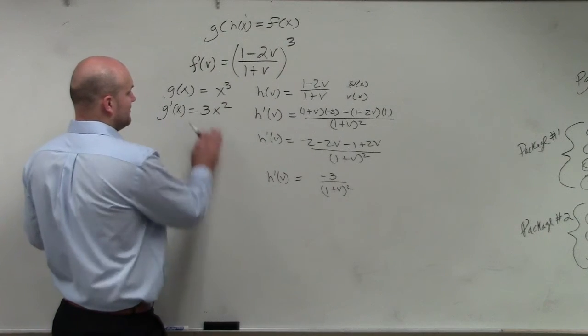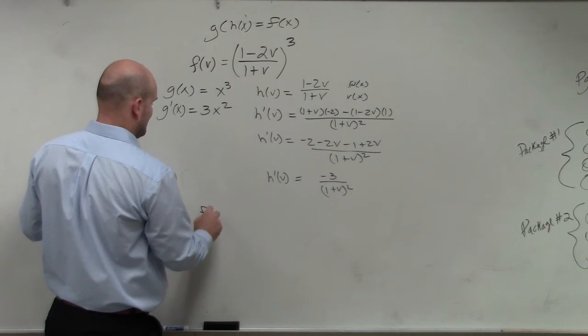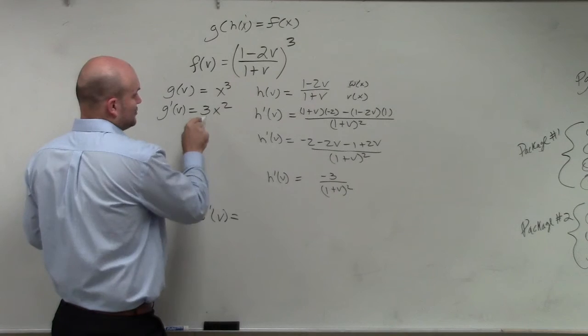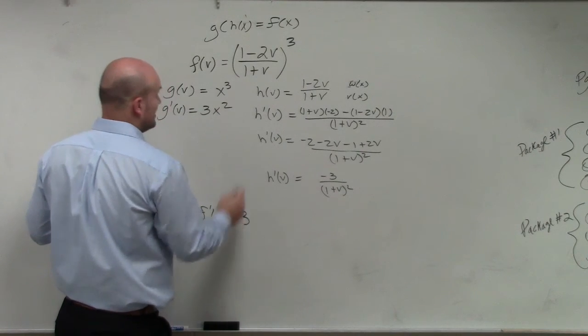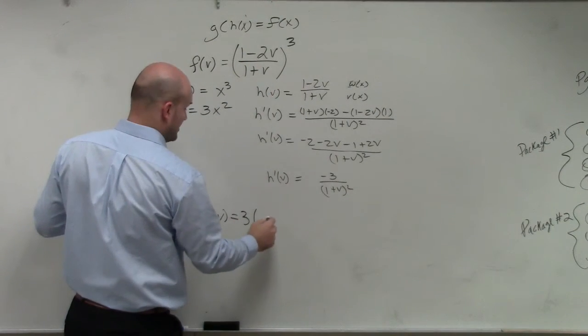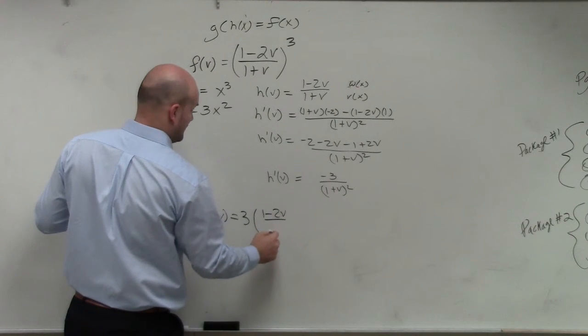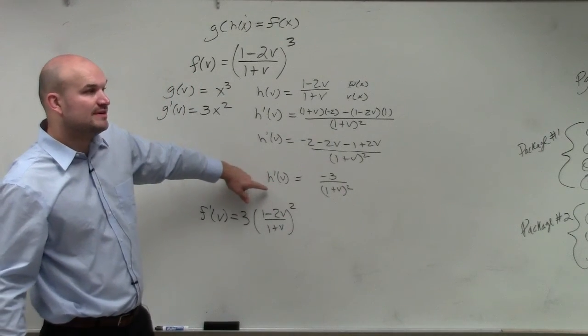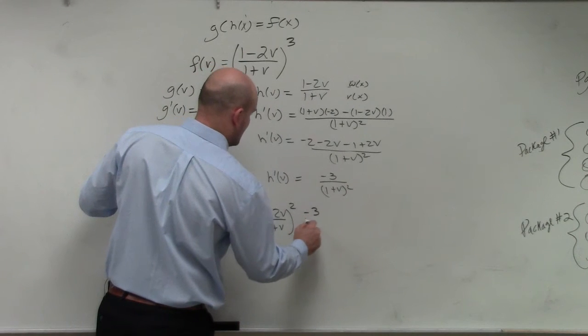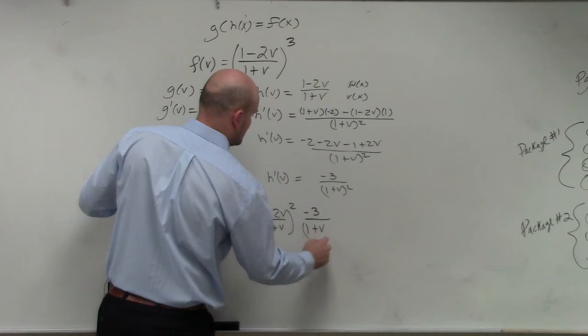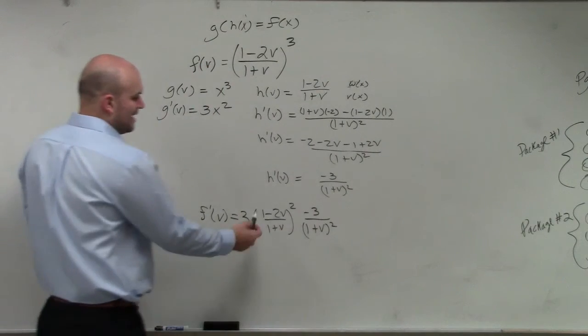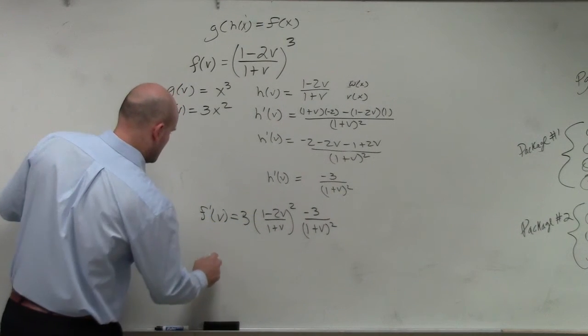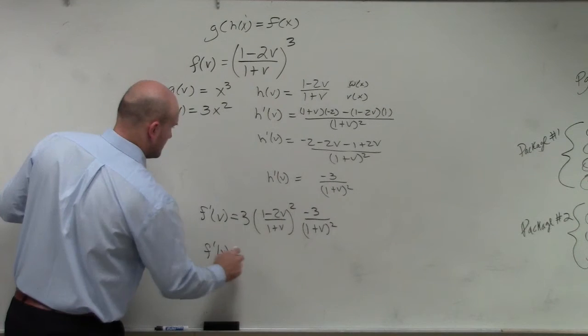So the chain rule, I basically need to take my derivative of my outside function. So f prime of v, why I keep on using x's. You're going to take your derivative, which is 3, plug in your inside function. So 3 over 1 minus 2v over 1 plus v squared. And then multiply that times the derivative of your inside function, which is a negative 3 over 1 plus v squared.